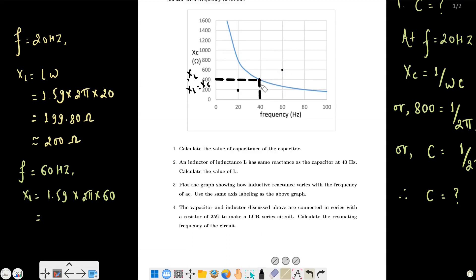Plot these points: 20, 40, 60 Hz with corresponding X_L values. Connect with a straight line showing X_L variation.